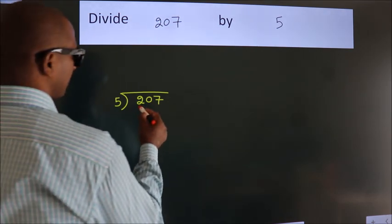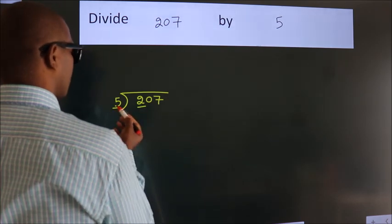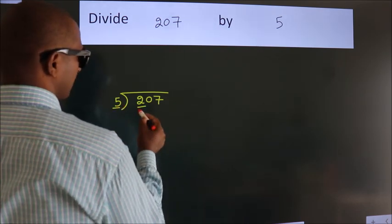Next, here we have 2. Here 5. 2 smaller than 5. So we should take 2 numbers: 20.